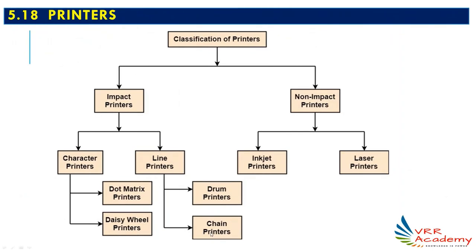The next hardware device is printers — a very popular output device already discussed in chapter one. There are two types: impact printers (divided into character printers like dot matrix and daisy wheel, and line printers like drum and chain) and non-impact printers (inkjet and laser printers).